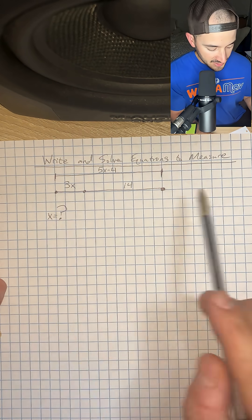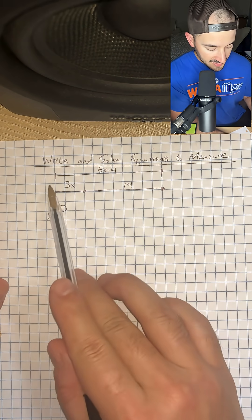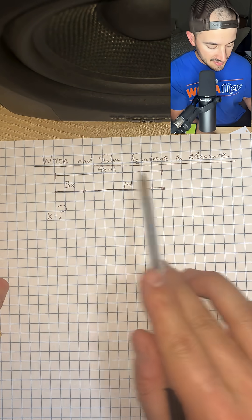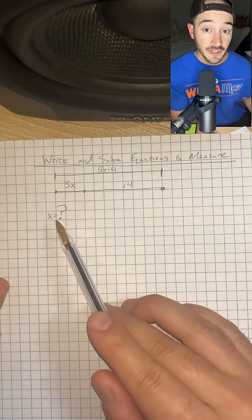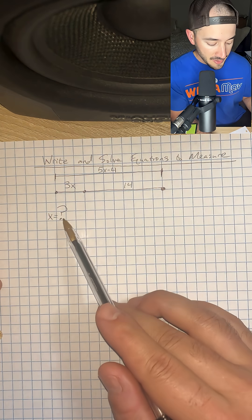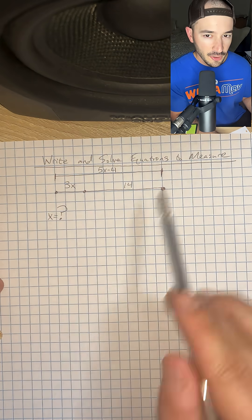So we have this line segment and we have it divided up into 3x and 14, and they tell us that the whole line segment is equal to 5x minus 4. So we want to solve for x, and we've got to think about what kind of equation we can write that makes this whole diagram make sense.